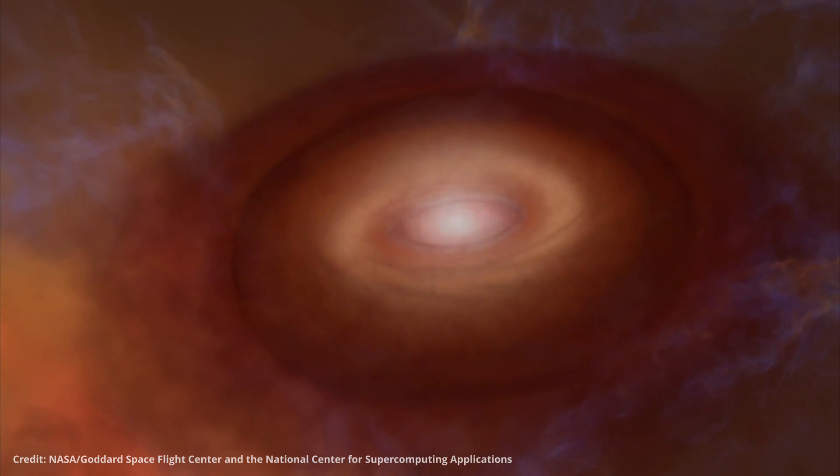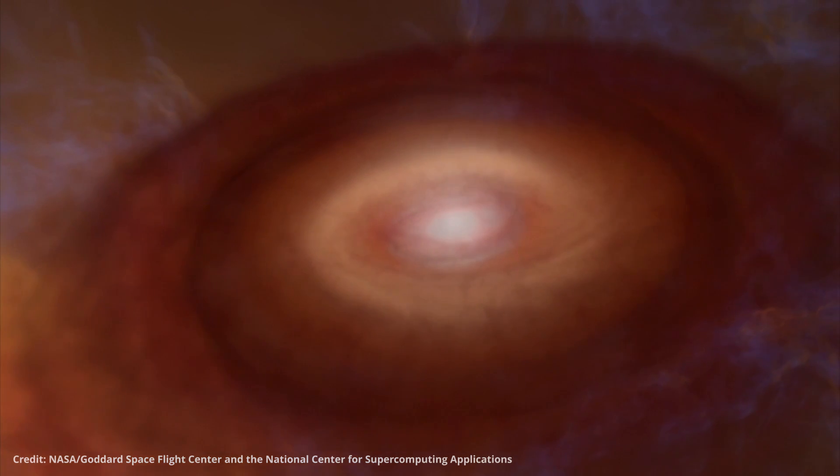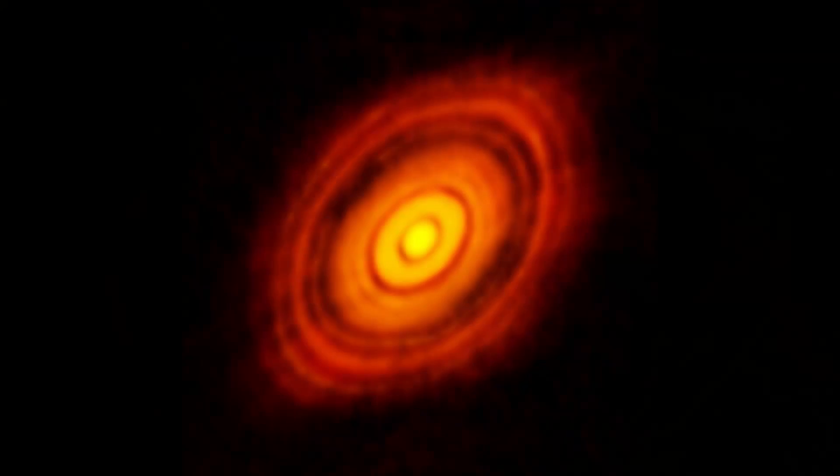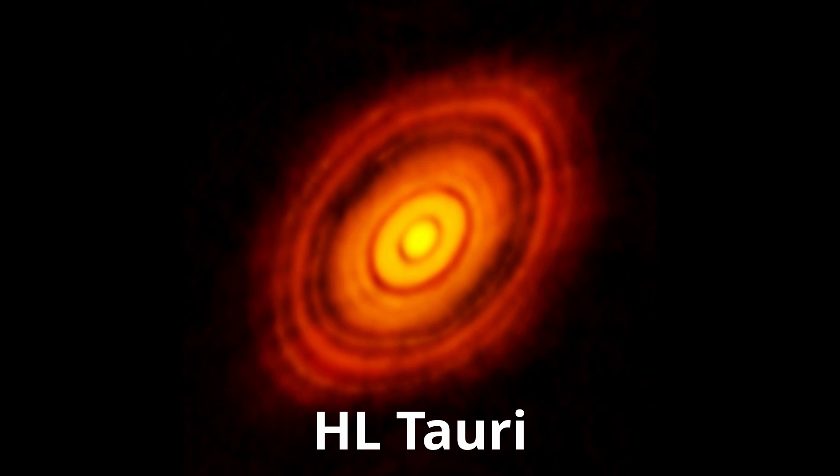At this stage, none of the planets have formed yet. They are still pieces of dust, orbiting in a large protoplanetary disk, not too dissimilar to what the star HL Tauri currently looks like.